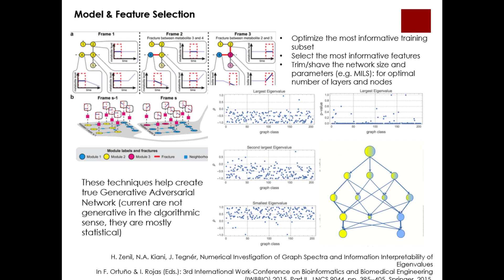One can also see how algorithmic feature selection and model generation can complement the current area of deep learning. This is done by reducing training sets and focusing on causal elements rather than just combinatorial statistics. It can also trim models and help choose the right parameters for the model of the model — known as hyperparameters — such as the size of the network, the number of layers, or the precision of the weights. The feature selection would be very similar to the application we saw before with the investigation of eigenvalues in graph spectra, where we can find which elements are the most informative to learn and which are not even worth considering. Together with many other ideas we are exploring, these methods are introducing cause and effect into machine learning.